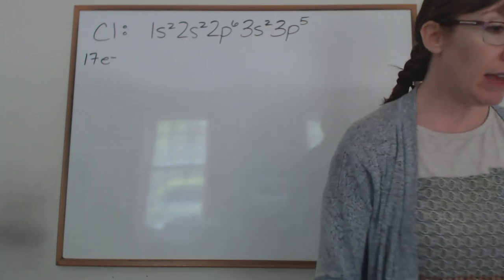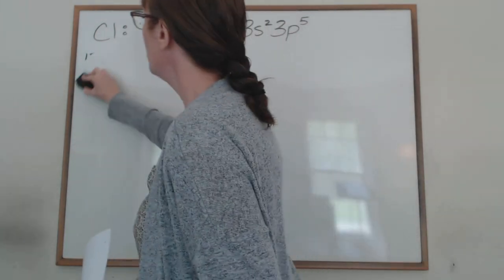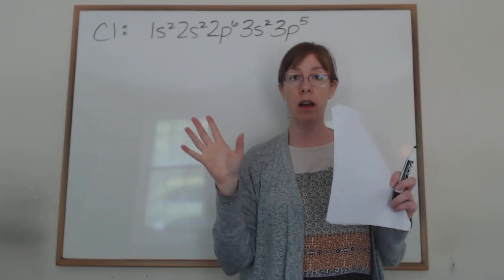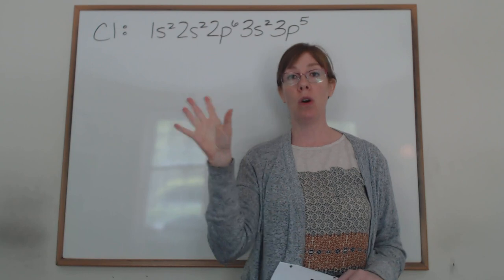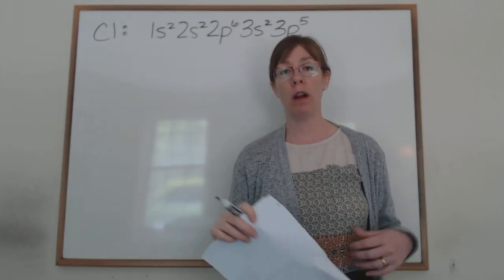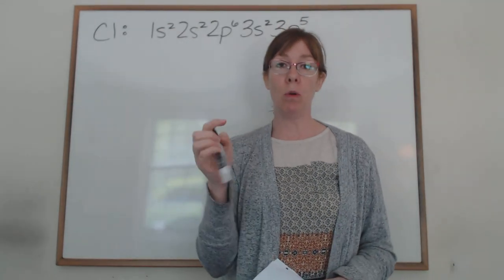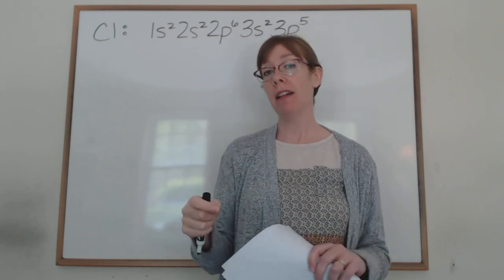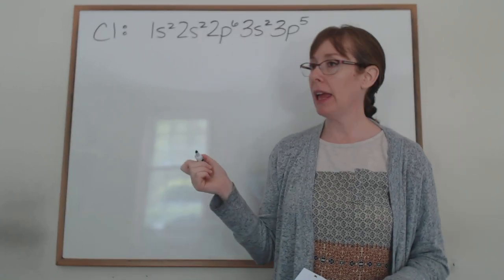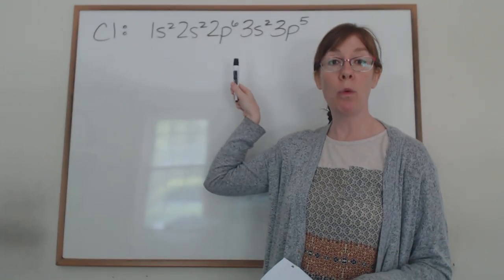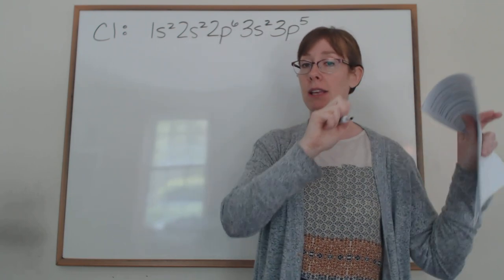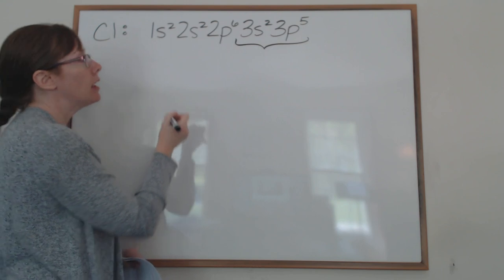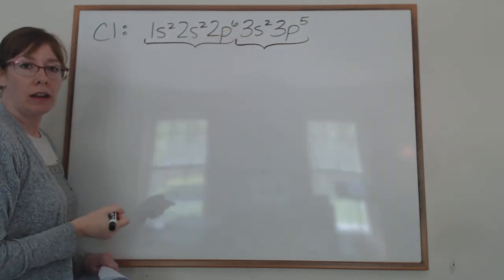In every electron configuration — which shows you what orbitals have electrons in them for a particular atom — you can divide the electrons into two groups: core versus valence electrons. The core is just like the same concept as an apple core: an apple core is on the inside, so core electrons are on the inside of the atom, whereas valence electrons are on the outside.